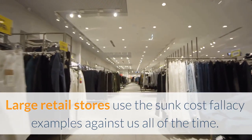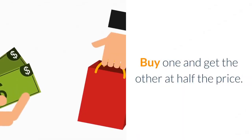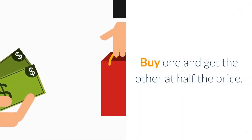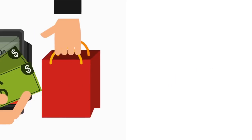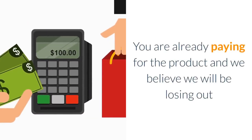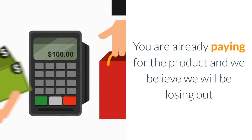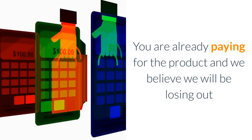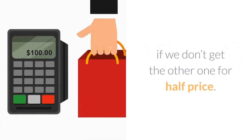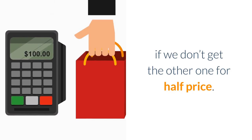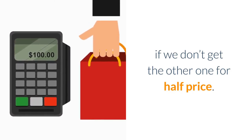Large retail stores use the sunk cost fallacy against us all the time. Buy one and get the other at half price — you are already paying for the product, and we believe we will be losing out if we don't get the second one at half price.